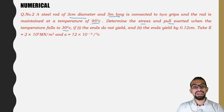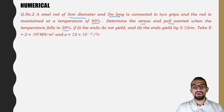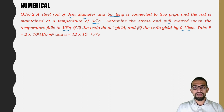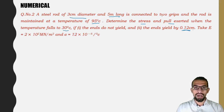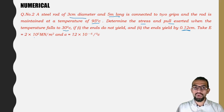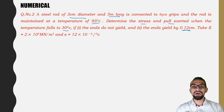Two temperatures are given: initial 95°C and final 30°C — so temperature falls. First case: the ends do not yield. Second case: the ends yield by 0.12 cm. Take E = 2 × 10⁵ MN/m² (= 2 × 10⁵ N/mm²) and alpha = 12 × 10⁻⁶ per degree centigrade.